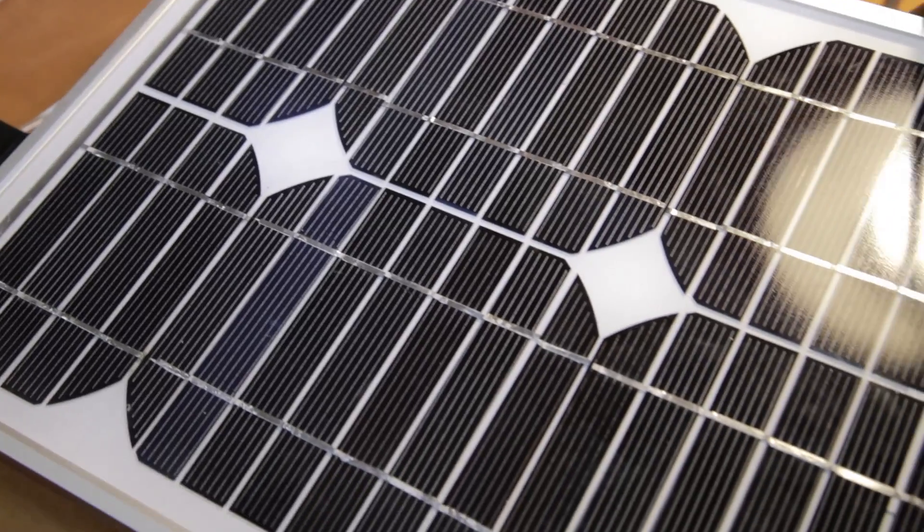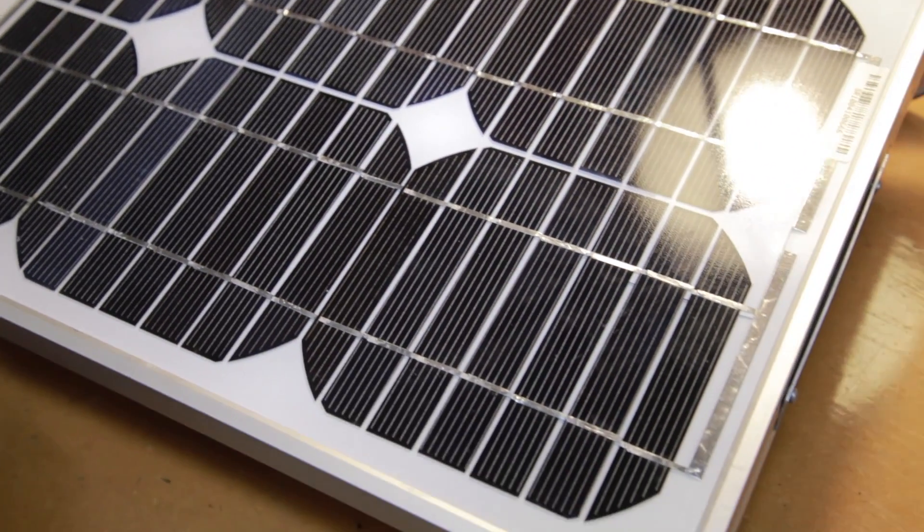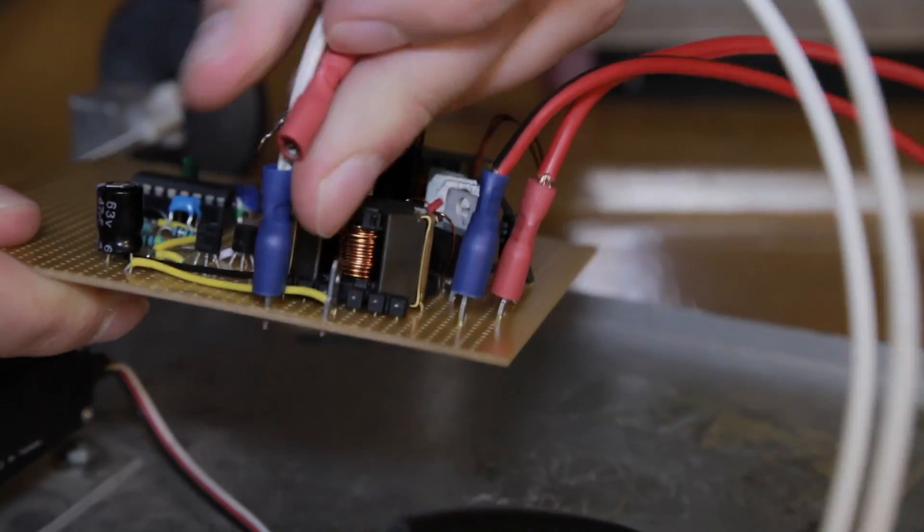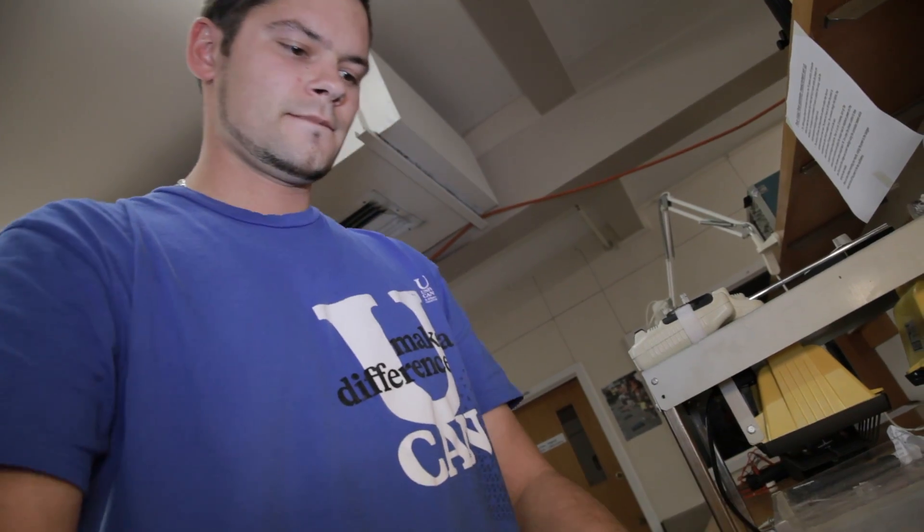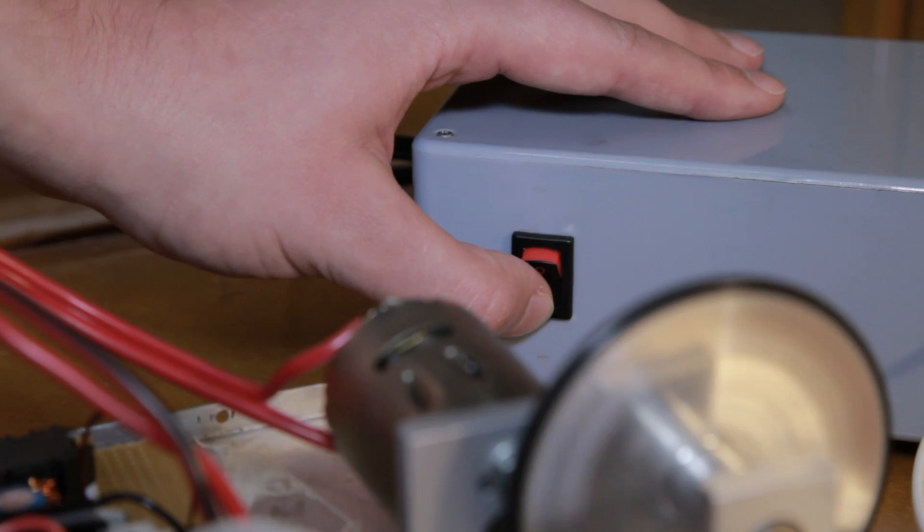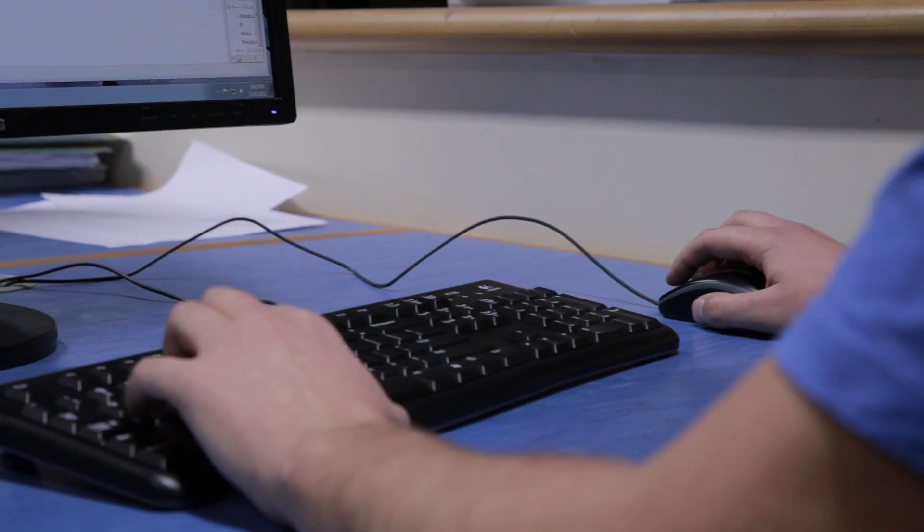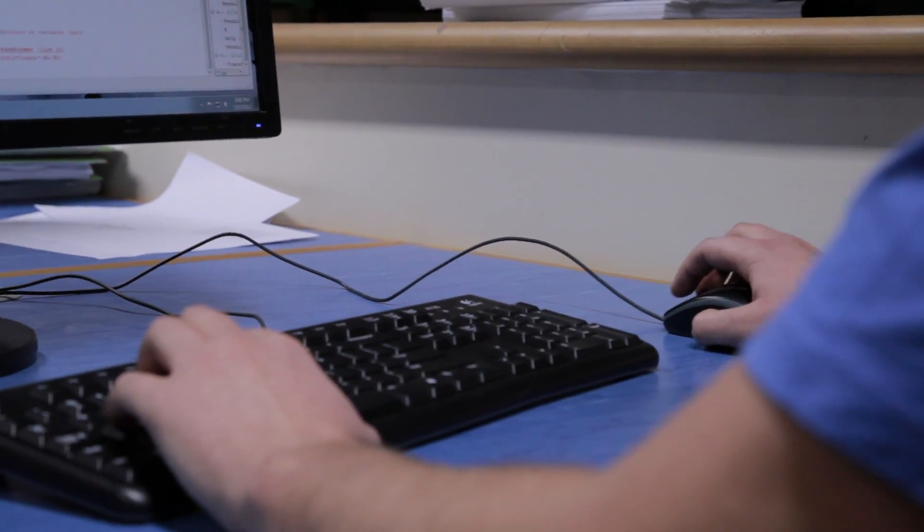Today I want to show you my solar car project. This project is a part of my power electronics paper and it combines every skill I've obtained so far throughout my degree. The main goal was to interface a solar panel to a little DC motor, and to do this a power converter had to be designed.